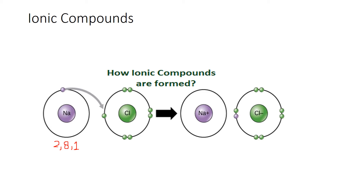But if we look at metals or non-metals, they have less than 8 electrons in the outermost shell. Metals generally have 1, 2, or 3 electrons in the outermost shell, whereas non-metals have 4, 5, 6, or 7 electrons in the outermost shell. If you see chlorine, it has 7 electrons in the outermost shell.